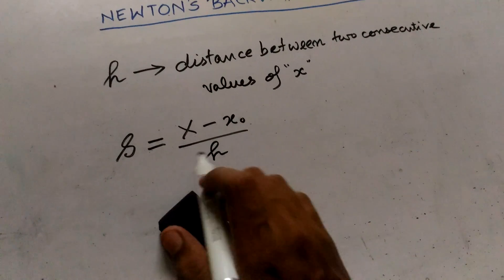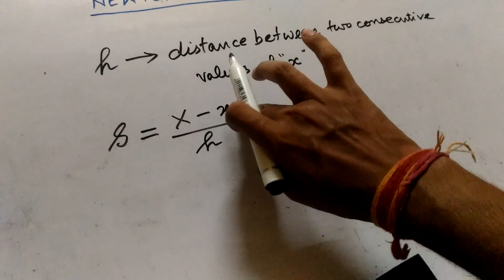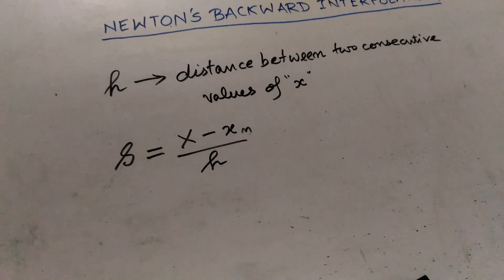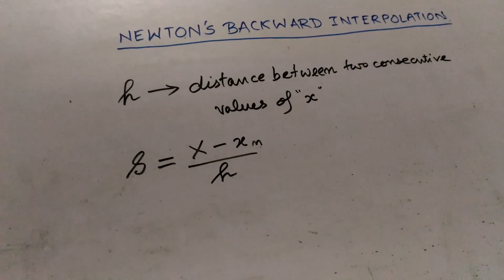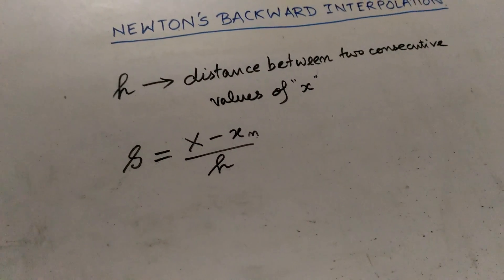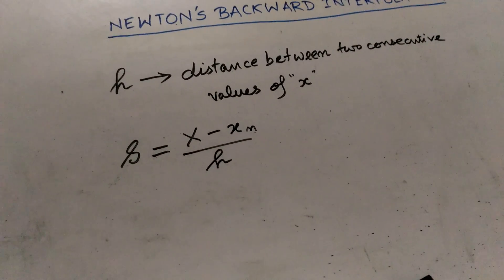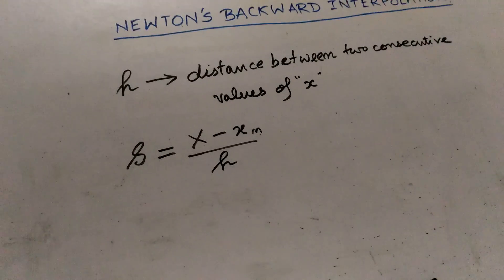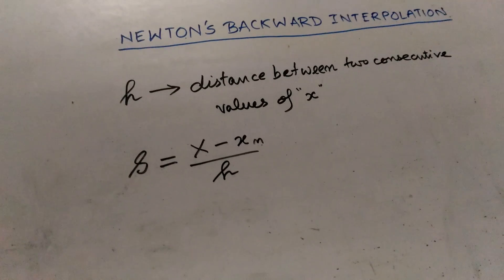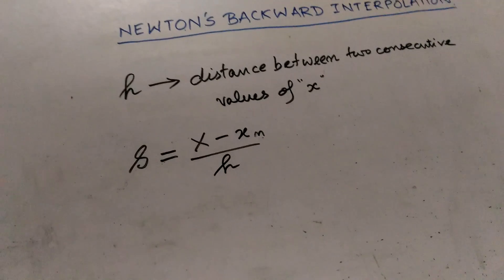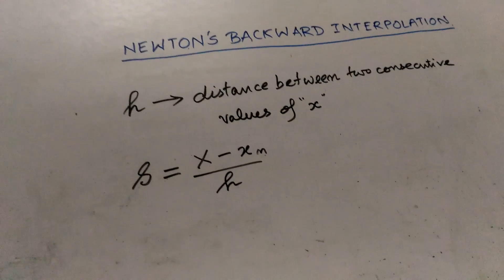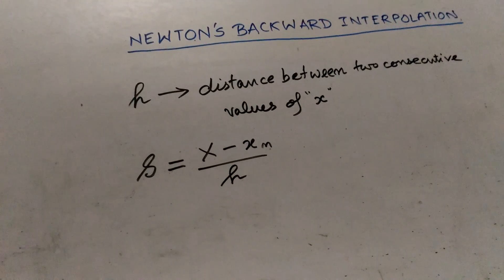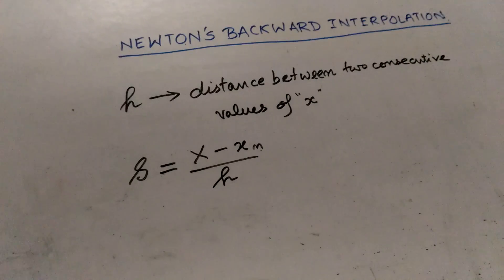In Newton's Backward Interpolation method, there will be a slight change in the formula. The formula will be S equals x minus xₙ divided by h, where xₙ is the last term in the column containing the values of x. In Newton's Forward method we used the first term, and in the Backward method we use the last term. The same applies to y, Δy, Δ²y, Δ³y, and so on — we always use the last terms of every column.